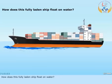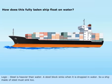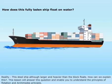How does this fully laden ship float on water? Steel is heavier than water. A steel block sinks when it is dropped in water. So, a ship made of steel must sink too. This steel ship, although larger and heavier than the block, floats. How can we explain this? This lesson will answer this question and enable you to understand the principles of floatation and Archimedes' principle.